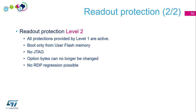RDP level 2 includes all the protections of level 1, with additional restrictions. You can no longer boot from the embedded bootloader — only from user flash memory. There is no more debugging link access. Option bytes cannot be changed anymore — all option bytes, whatever their configuration. No RDP regression is possible; this is a terminal state. You cannot come back to level 1. Your device is permanently locked.